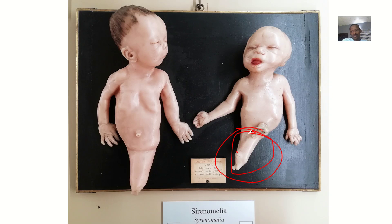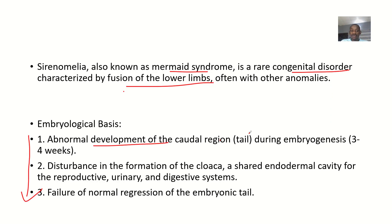It usually occurs with some other accompanying anomalies. So sirenomelia — let's define it. Sirenomelia is also known as mermaid syndrome. It is a rare congenital disorder characterized by fusion of the lower limbs, often with other anomalies.